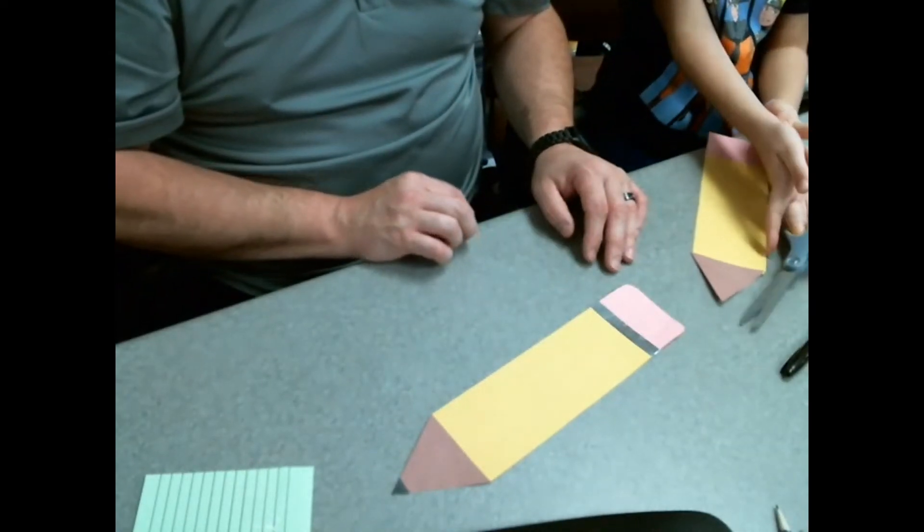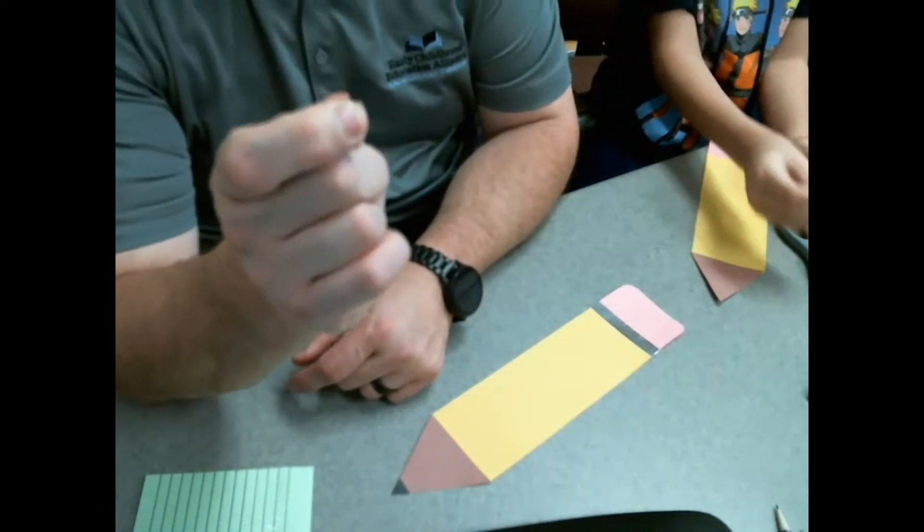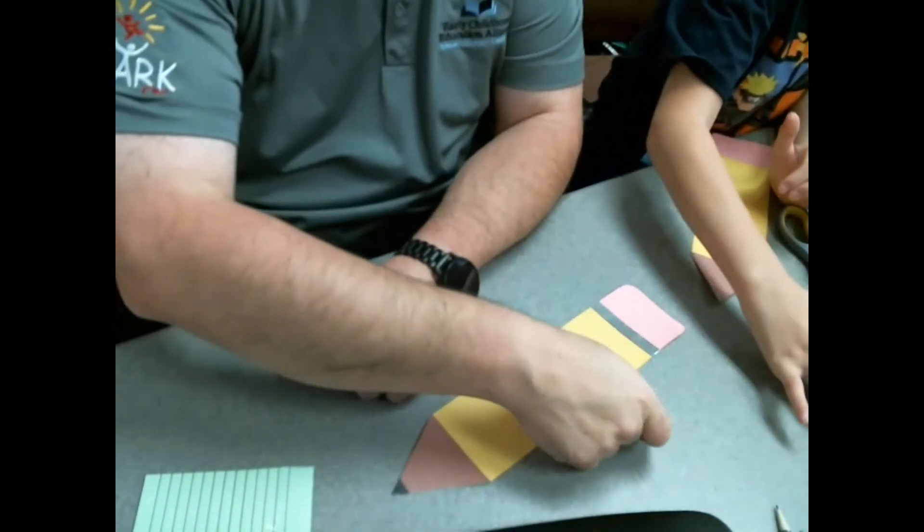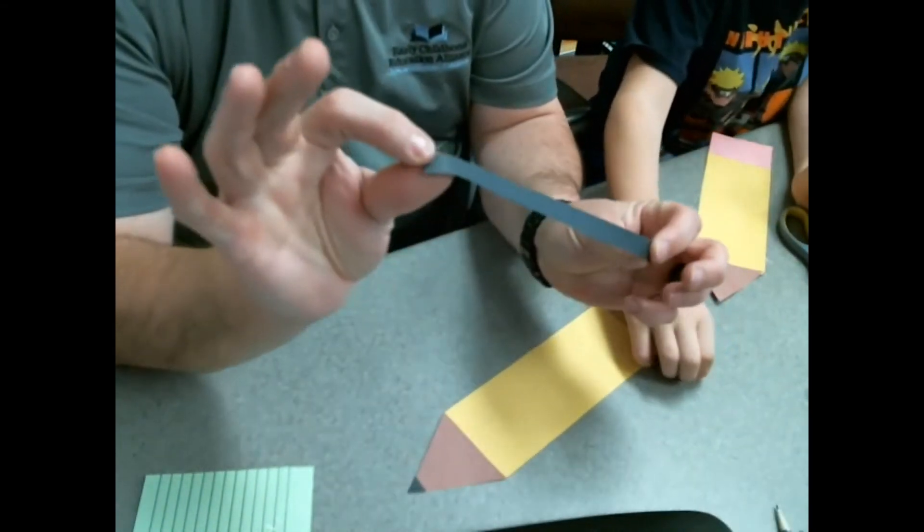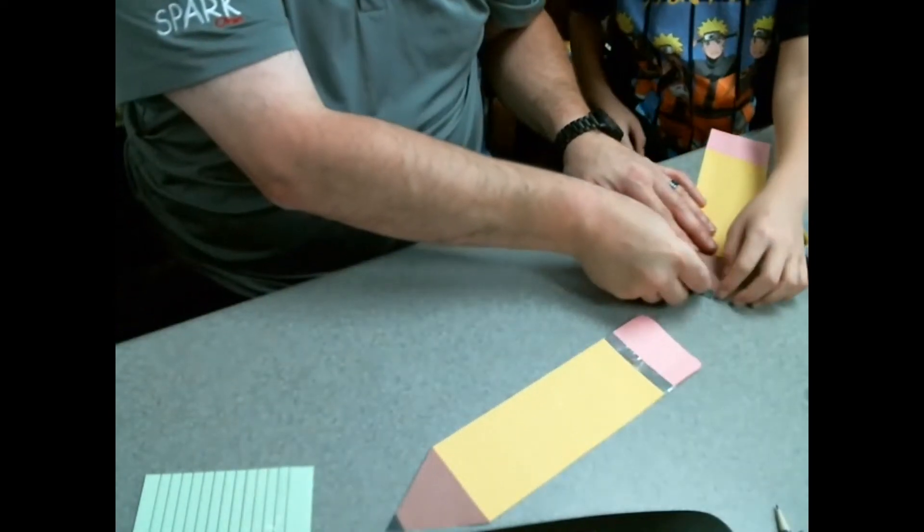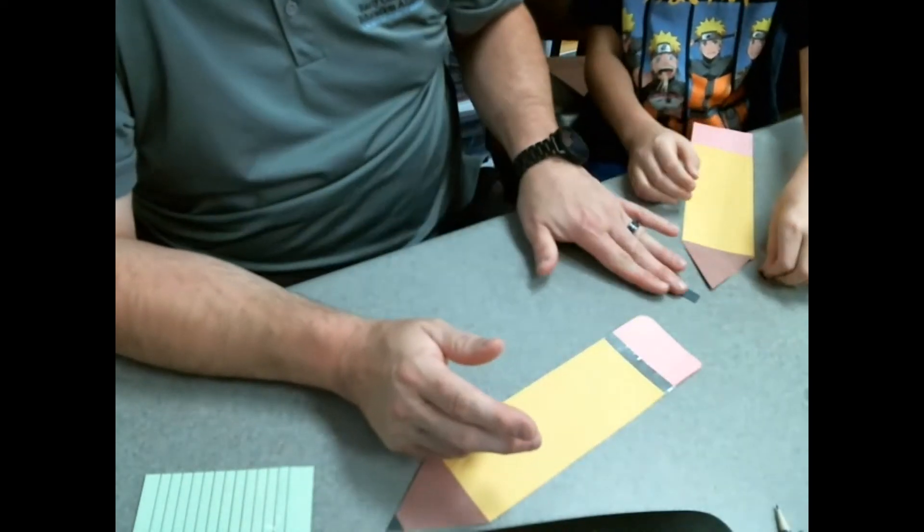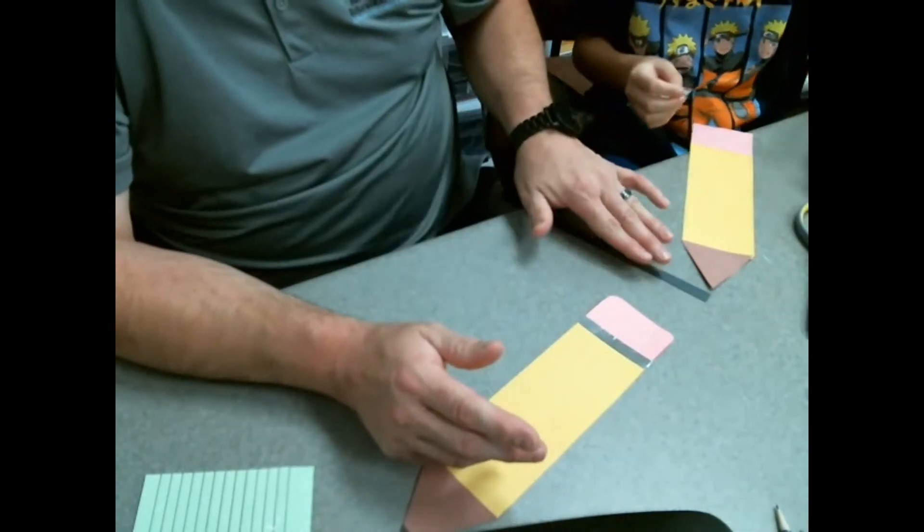So remember we're talking about the equilateral triangles. Now you could do this one of two ways - I already pre-cut my triangles out, but you can also take your black strip. I did mine about a half an inch. You can glue this on, so go ahead and glue that on the square one. Just a little bit, Alex.